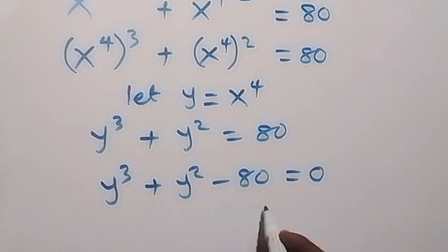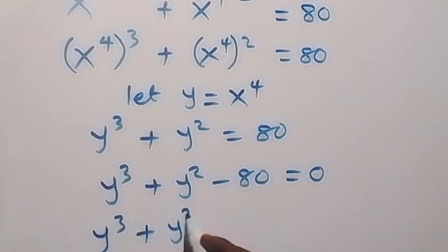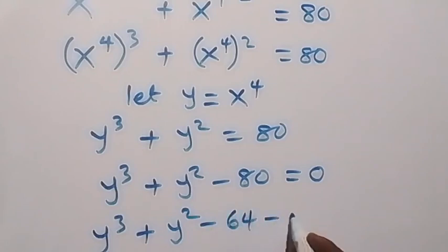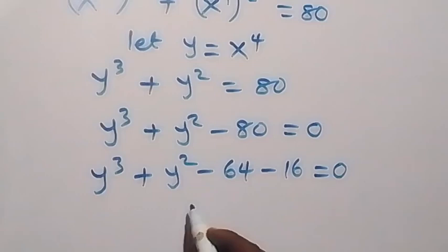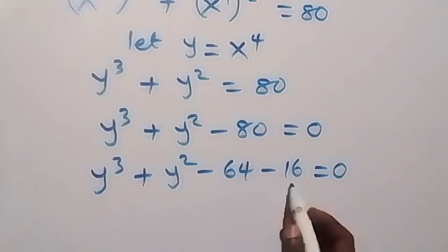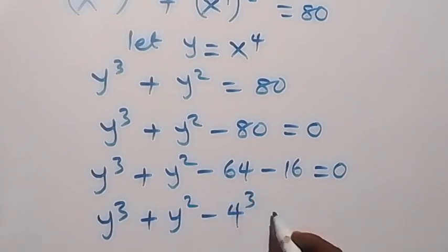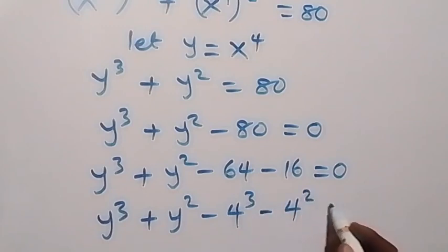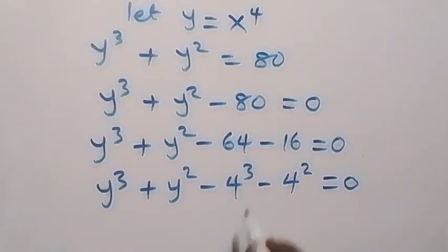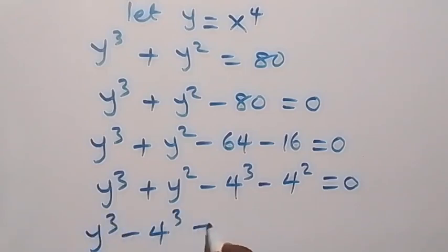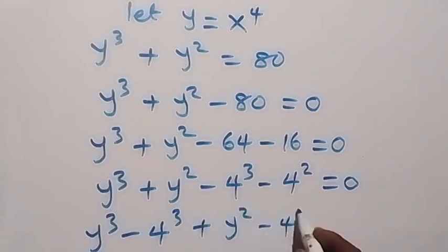From here, we can write 64 as 4 raised to power 3 and 16 as 4 squared. Then this gives us y cubed plus y squared minus 4 raised to power 3 minus 4 squared plus 16, equals to 0. When we group the power-3 terms together, we have y raised to power 3 minus 4 raised to power 3, plus y squared minus 4 squared, equals to 0.